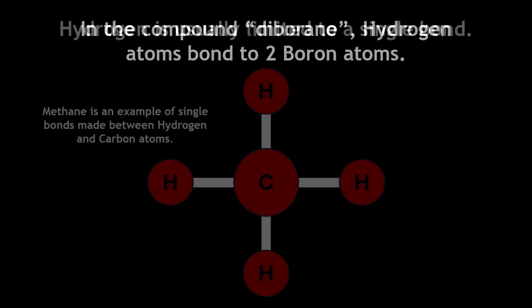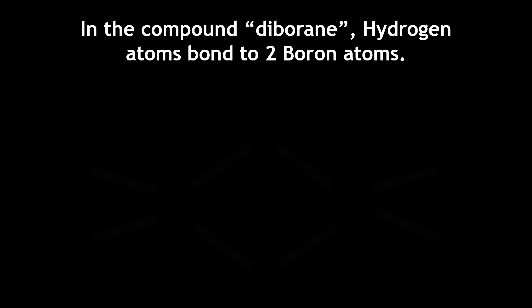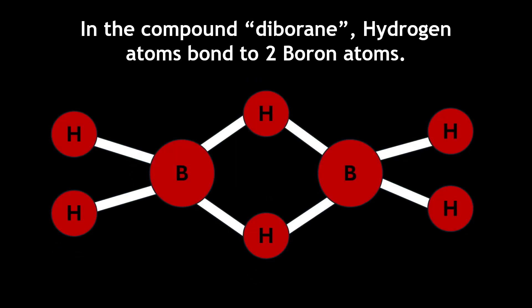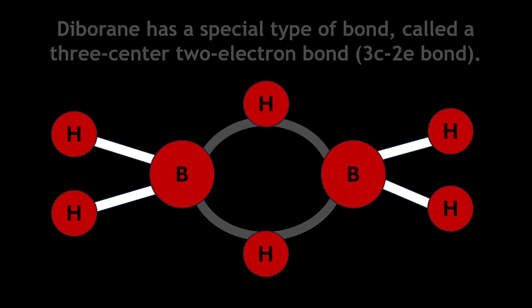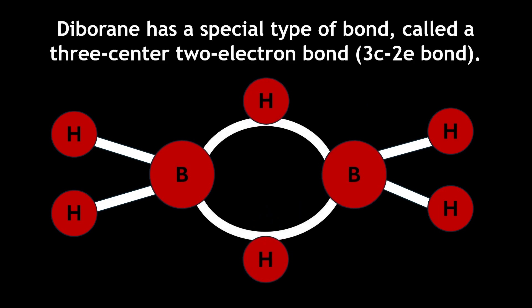However, in the compound diborane, hydrogen bonds to two boron atoms in a special way, with three-center two-electron bonds, or 3c-2e bonds for short.